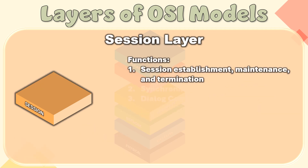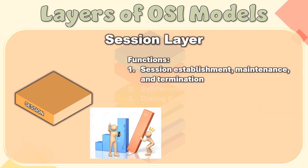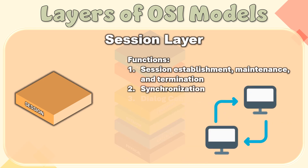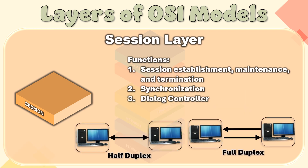Functions of the Session Layer. Session Establishment, Maintenance and Termination: The layer allows the two processes to establish, use, and terminate a connection. Synchronization: This layer allows a process to add checkpoints, considered synchronization points, in the data. These synchronization points help to identify errors so that the data is resynchronized properly and ends of messages are not cut prematurely, thus avoiding data loss. Dialogue Controller: The session layer allows two systems to start communication with each other in half-duplex or full-duplex.